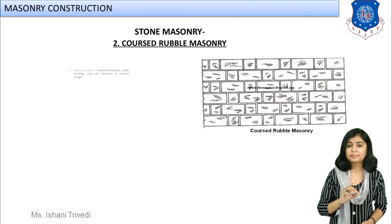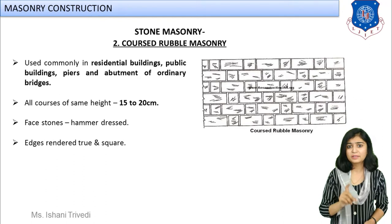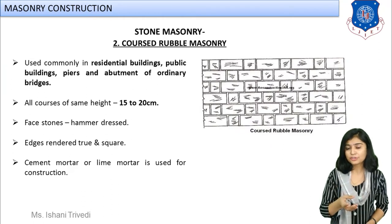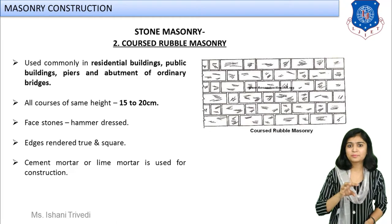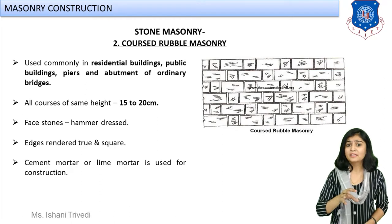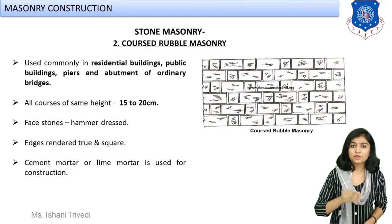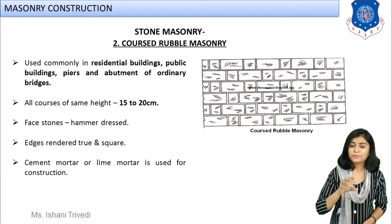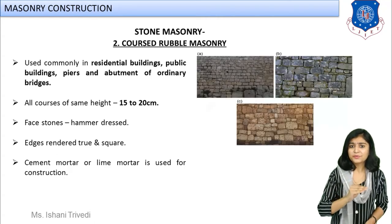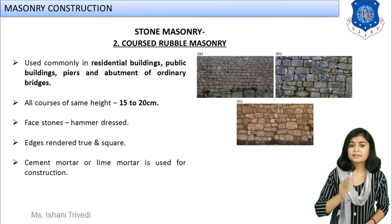The second type of rubble masonry is coarse rubble masonry. Here the stones are cut to proper size and shape — weak edges are cut off and somewhat dressing is provided. They are made true to their shape for the bed joints, which makes the joint thickness decrease. The courses will be definite, around 15 to 20 cm in height. You can see Class A, Class B, and Class C varieties of coarse rubble masonry.